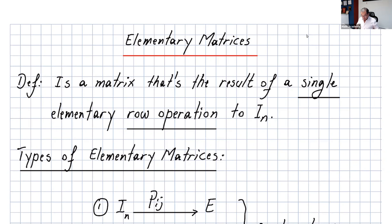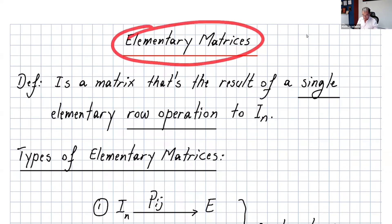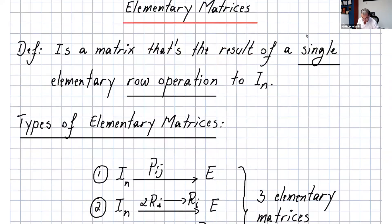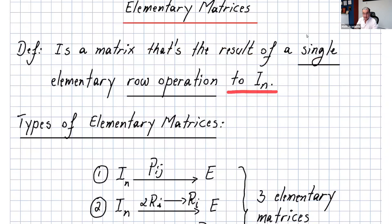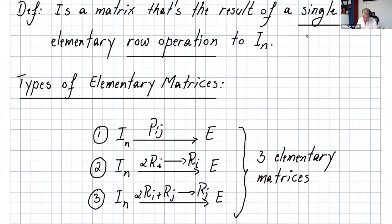Welcome to this lecture on elementary matrices. An elementary matrix is a matrix that results from performing a single elementary row operation on the identity matrix I_n. You always start from the identity matrix, apply one row operation, and the result is an elementary matrix.